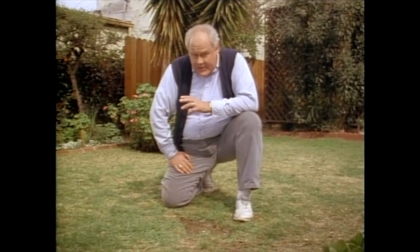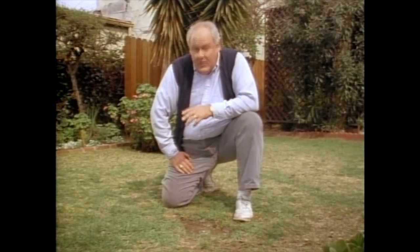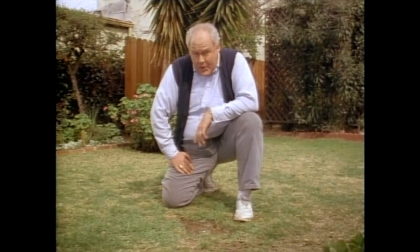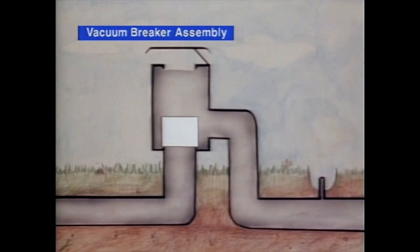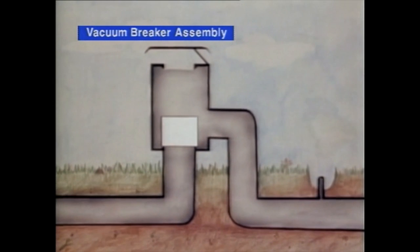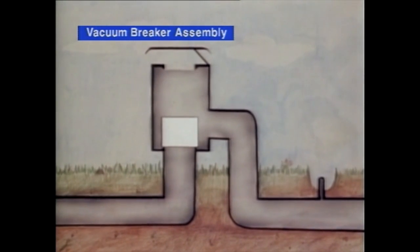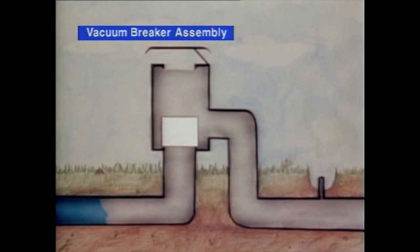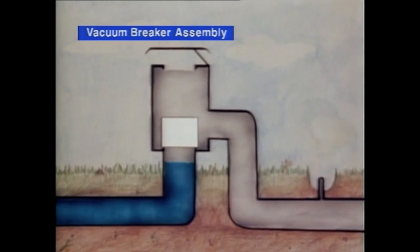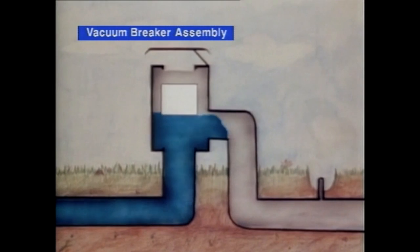Fortunately, it is easily prevented with a vacuum breaker. A vacuum breaker is basically an air vent installed in a fitting that's mounted higher than any other point downstream. There are two types of vacuum breakers: an atmospheric and a pressure vacuum breaker. Though mechanically different, they work on the same principle.